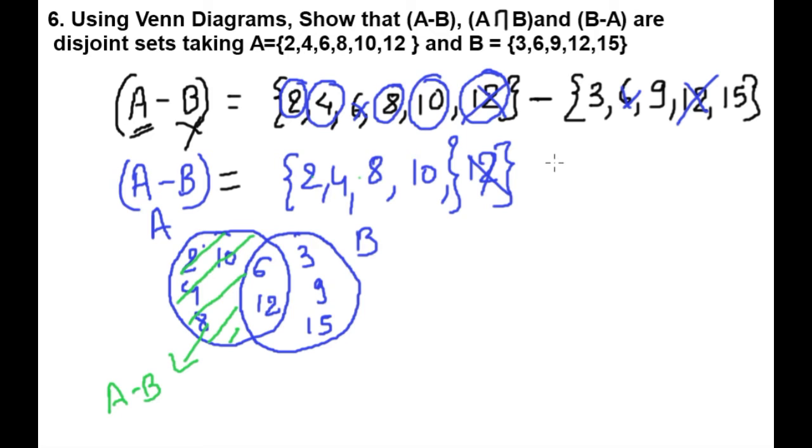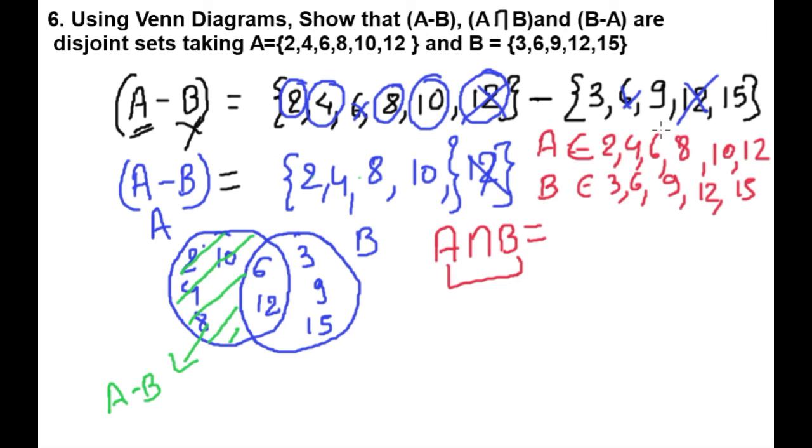Next, A intersection B. Intersection means we have to find common elements between A and B. Elements of A are 2, 4, 6, 8, 10, 12. The common elements are 6 and 12. This common area is our A∩B.